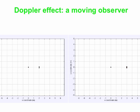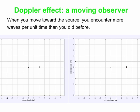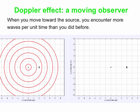Now let's see what happens when the observer moves. We'll keep the police car fixed and have the observer walk or run past it. If you move toward the source, you encounter more waves per unit time than before — the frequency of the waves you receive is larger. On the left is the case where everything's at rest for reference. In that time, four wave fronts passed over the observer.